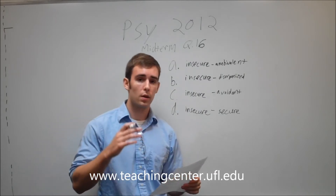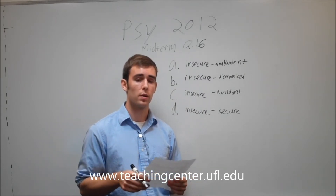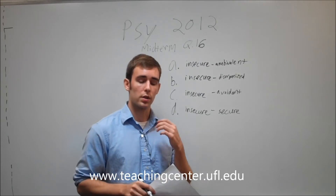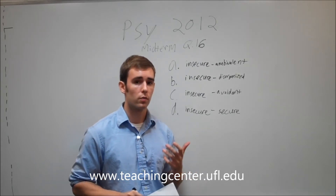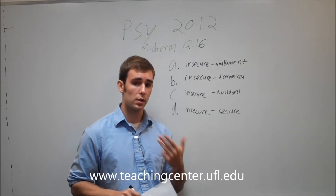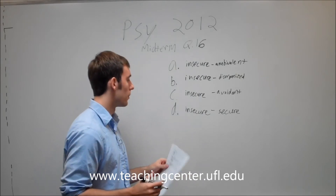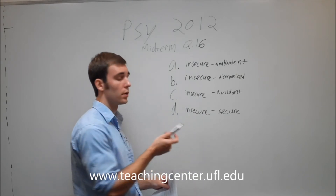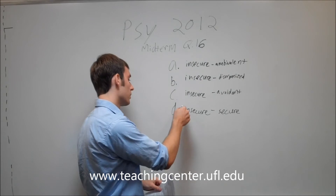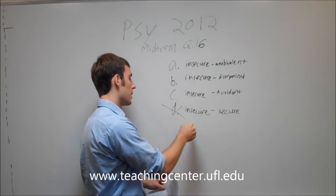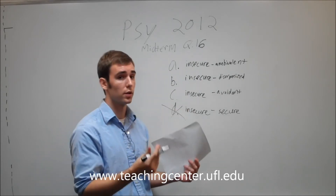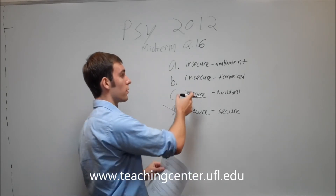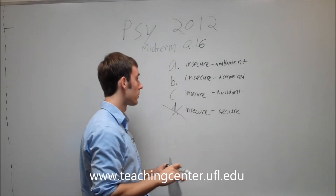Well, in the Ainsworth Strange Situation Experiment, infants display either a secure attachment or one of three types of insecure attachments. Insecure Secure is not one of them, so we can cross that out. It's either secure or one of the three insecure — it can't be both.